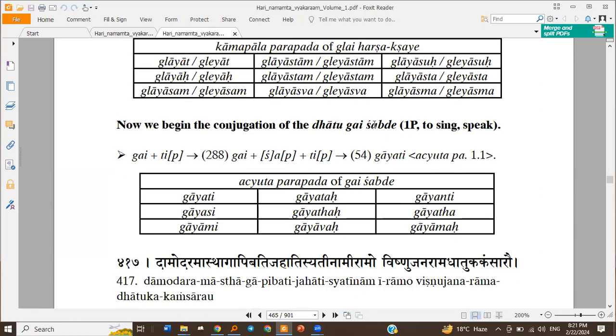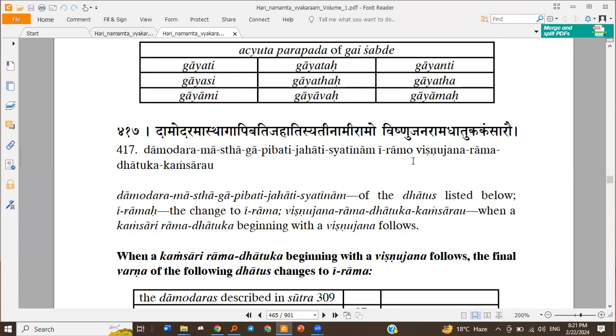Then Gai Shabde, which means to sing, speak. This is the next Dhatu. So Gaiati, Gai plus Tip Shab. I becomes Ai by Ai Ai Sandi Sutra, so Gaiati Gaiataha Gaianti.